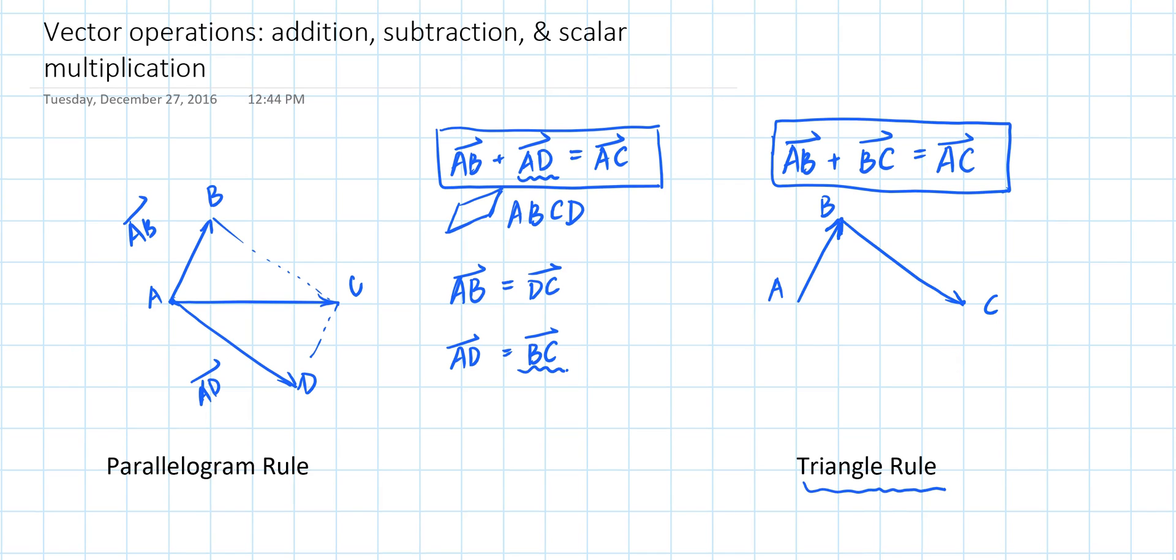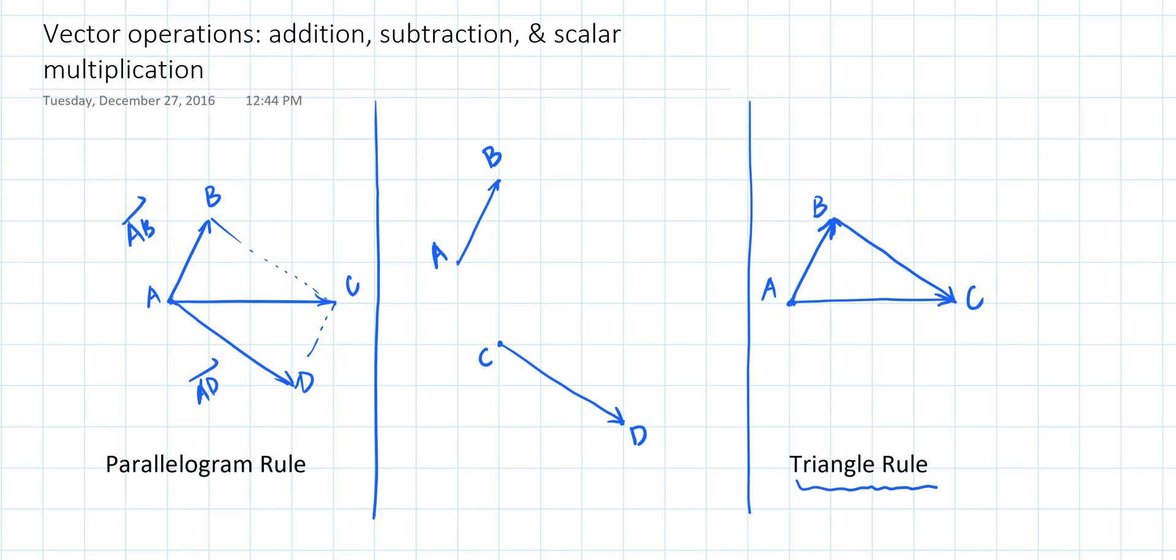The triangle rule is useful when you have two vectors that are positioned so that the initial point of one vector is the terminal point of the other vector. And in this case, the sum of the two vectors is vector AC. You can remember it this way: if you walked from point A to point B, and then from point B to point C, then you effectively walked from point A to point C. Now what if you have two geometric vectors whose initial points and terminal points don't coincide at all?